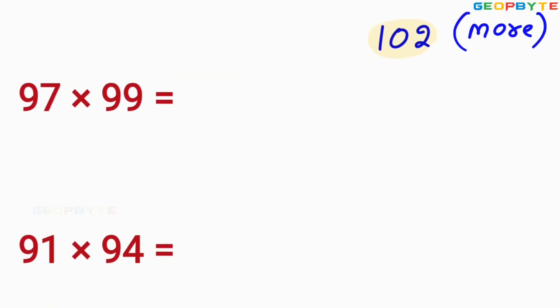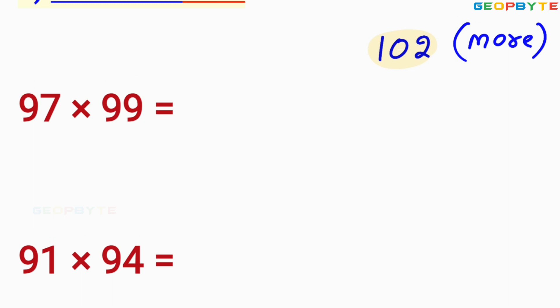The very first example is 97 into 99. Both 97 and 99 are close to 100 but less than 100. This 99 is less than 100 by 1, and 97 is also less than 100 by 3. Then you first multiply 3 and 1. What is 3 into 1? 3 into 1 is equal to 3, but always write it in terms of two digits: 03.